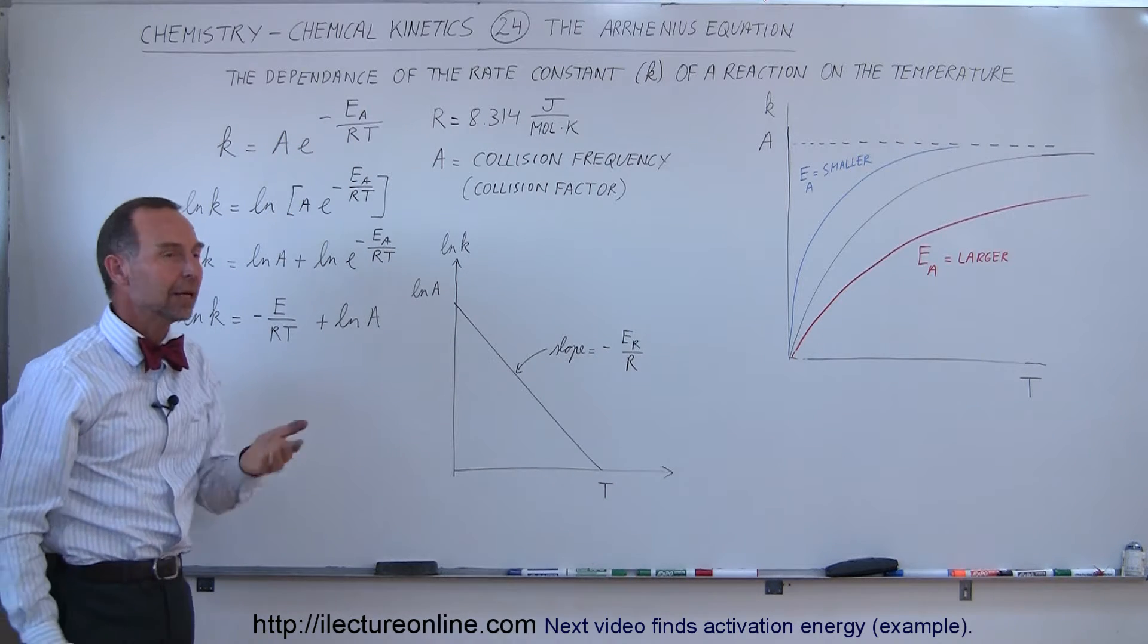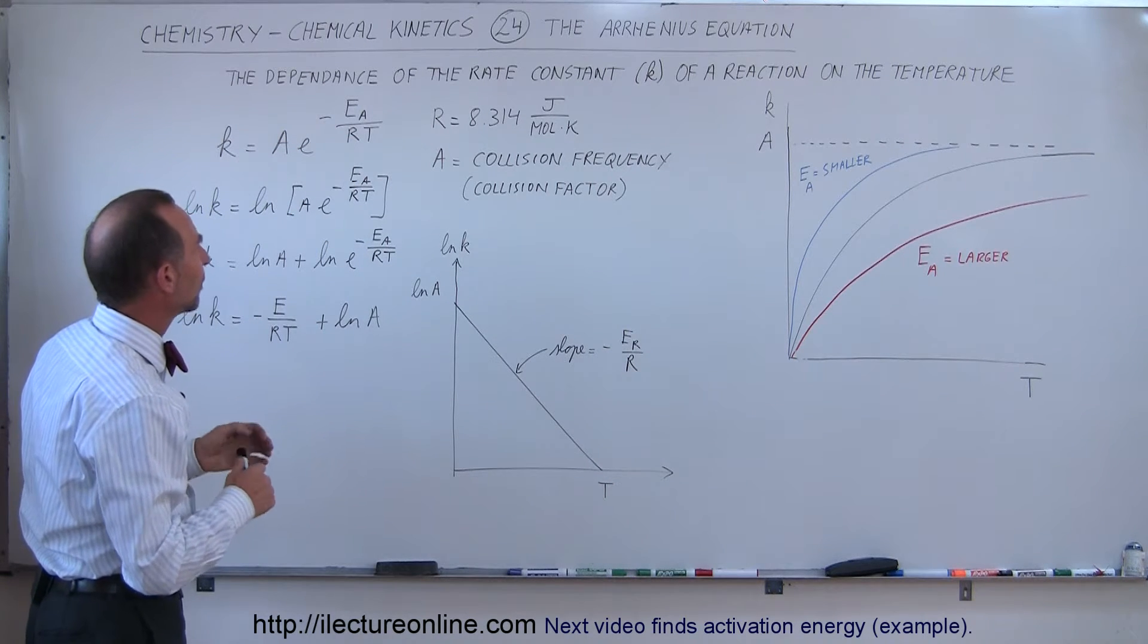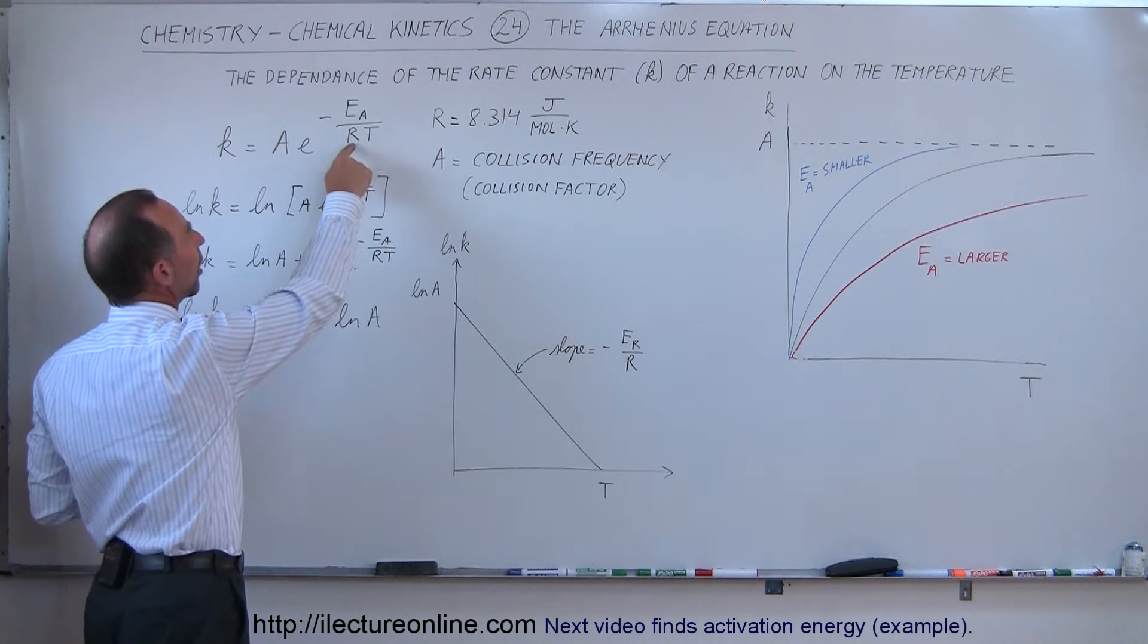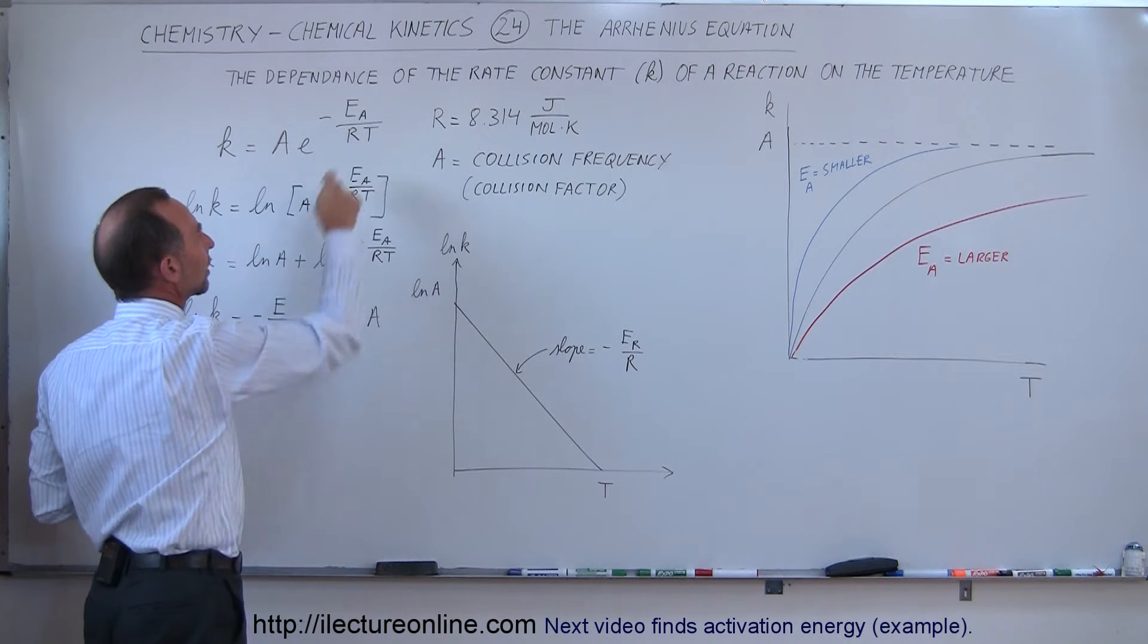Now RT comes from the equation PV equals nRT from the gas constant. So R is the gas constant, T is the temperature in Kelvin.